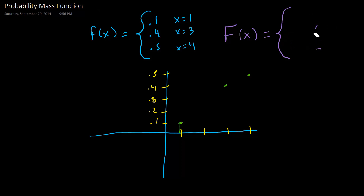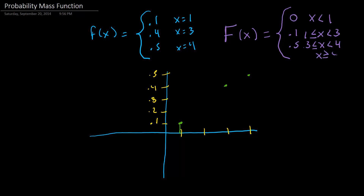So let me correct that. Once x equals 1 we get 0.1, so before that — when x is less than 1 — the cumulative distribution function is 0. When x is greater than or equal to 1 and less than 3, we get 0.1. Once x reaches 3, so when x is greater than or equal to 3 and less than 4, we get 0.5, because it's the cumulative sum of those two values. And once x is greater than or equal to 4, we get 1.